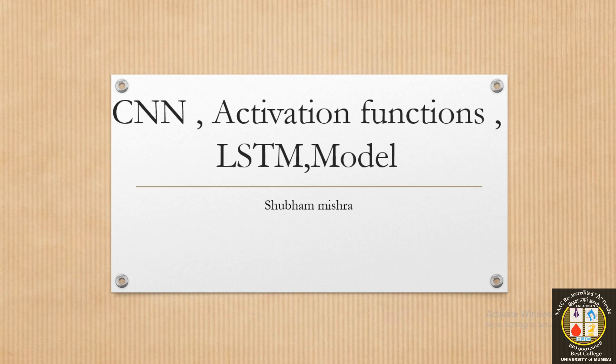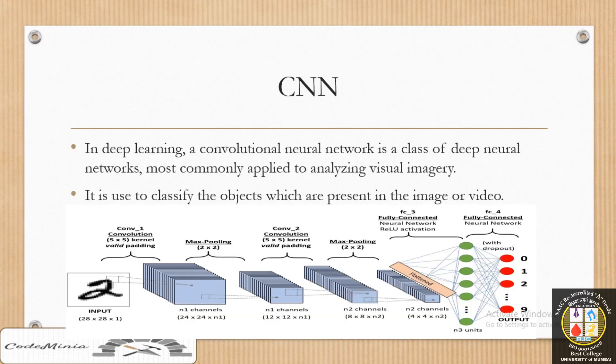Let's start with some theoretical parts which will help us throughout the development of this project. The first part is the CNN model, which stands for Convolutional Neural Network. This model helps us to classify the objects which are present in the image or video. We have different layers in the CNN model: Input layer, Hidden layer, and Output layer. In the Hidden layer, we have extra layers — the Pooling layer, Convolutional layer, Flatten layer, and Fully Connected layer. In the Pooling layer, we have a method called Max Pooling. In the Fully Connected layer, this is the main layer where we apply the Activation function — here we are applying the ReLU Activation function for accurate output.